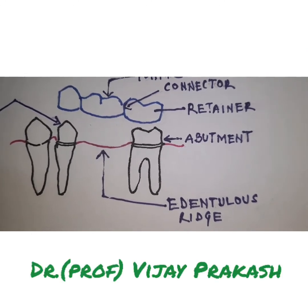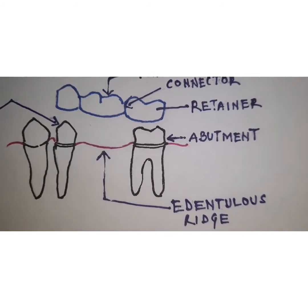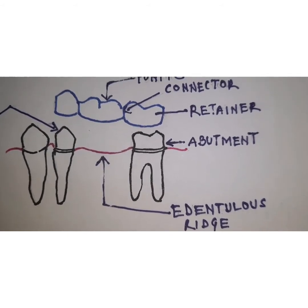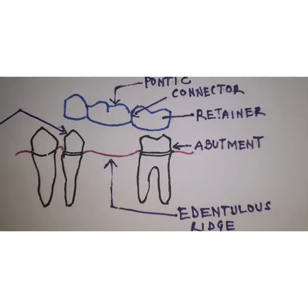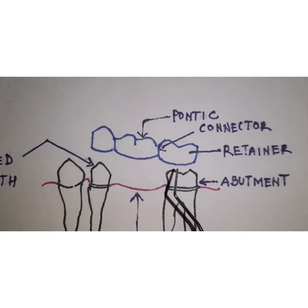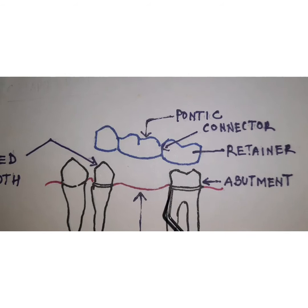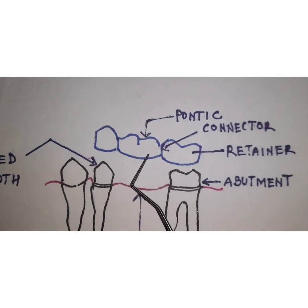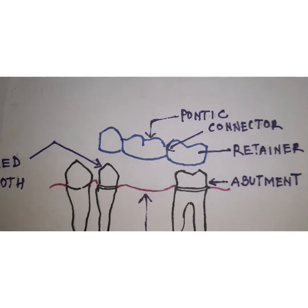Retainers are those parts of the fixed partial dentures which connect the pontic and are bonded onto the abutment teeth. These retainers are bonded onto the prepared abutment tooth, which connects the pontic — that is the part of the fixed partial denture.